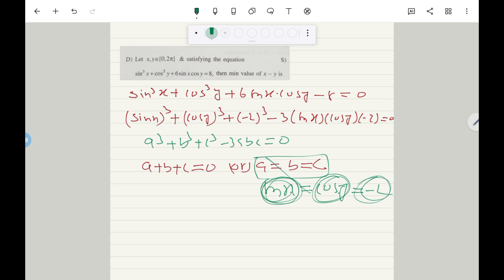This means we can rule out this condition. Now we can take this condition a + b + c = 0. By using that condition we can solve the problem.